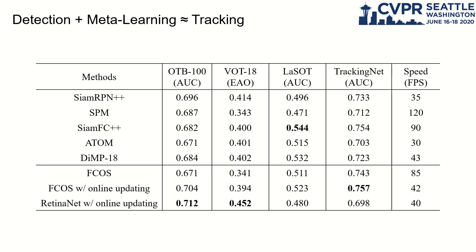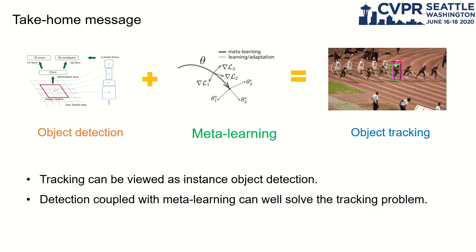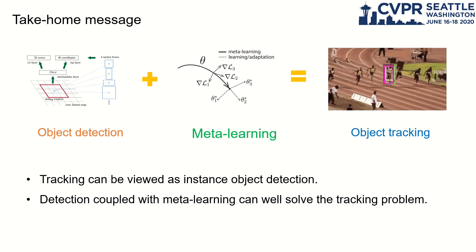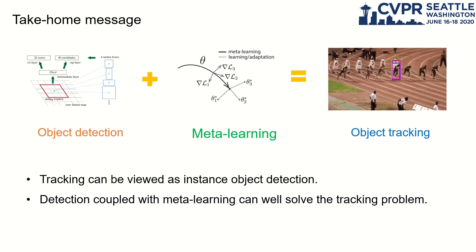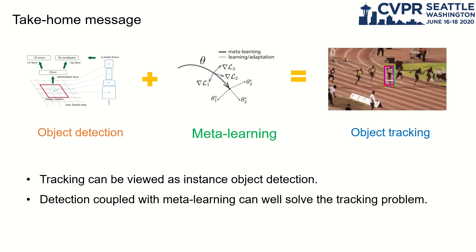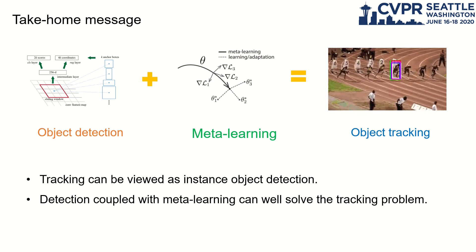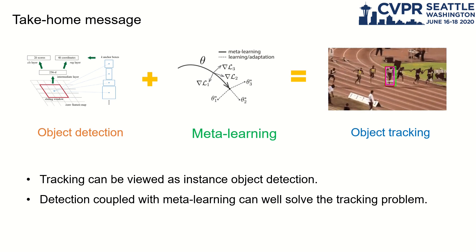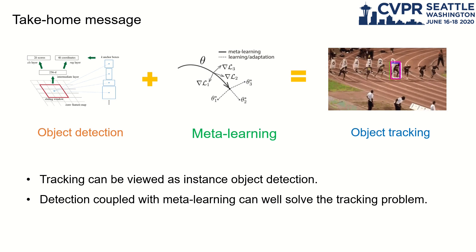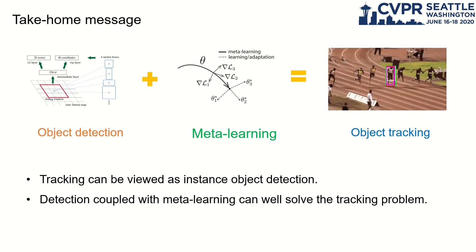We compare our method with recent top-performing trackers on four benchmarks. Although the approach is very simple, our trackers achieve very competitive performance against the state of the arts. In conclusion, we show that tracking can be viewed as instance object detection. Based on this idea, we propose to use meta-learning that bridges the gaps between object detection and object tracking. Thank you for your attention.